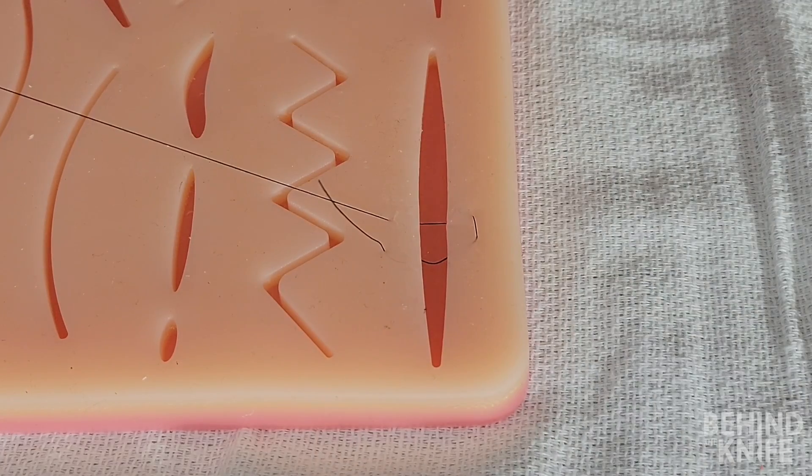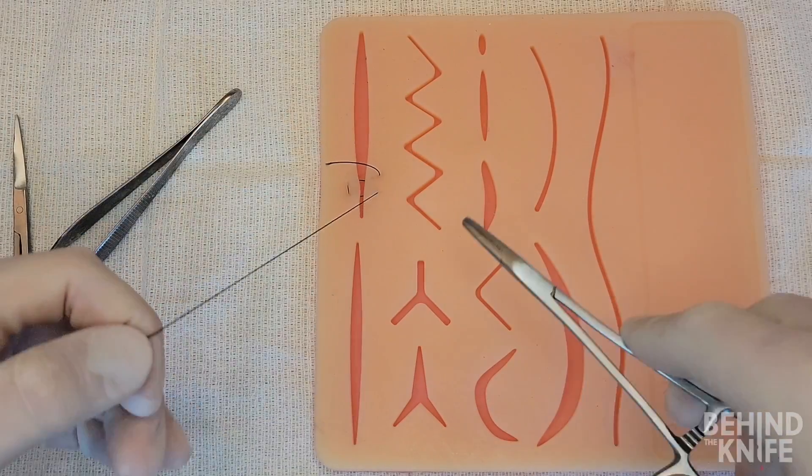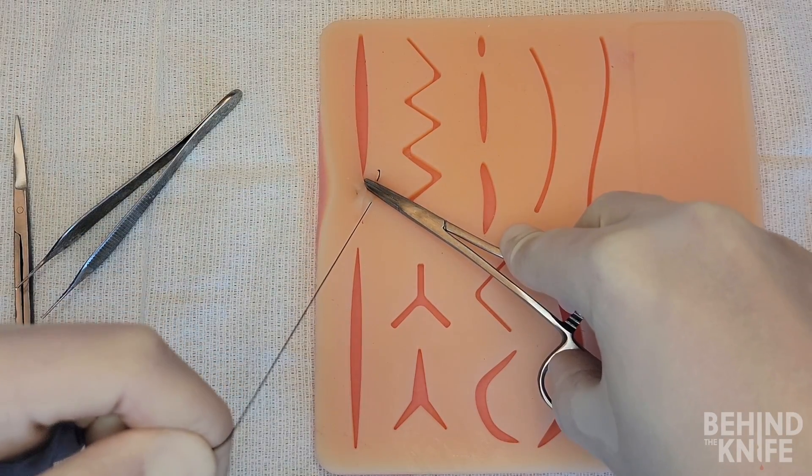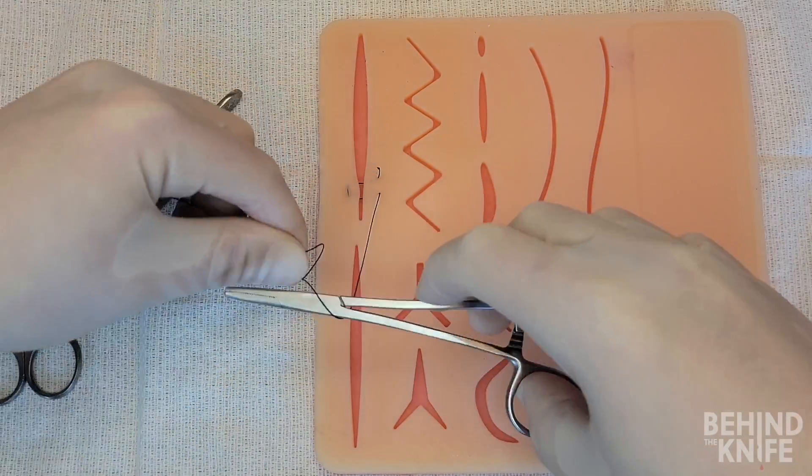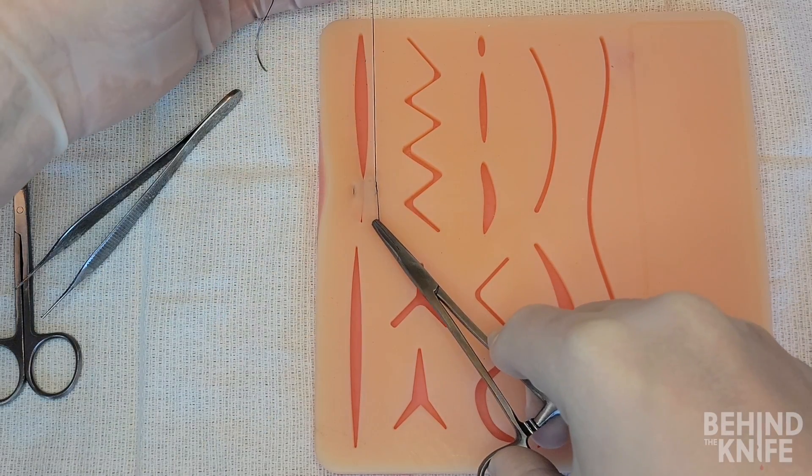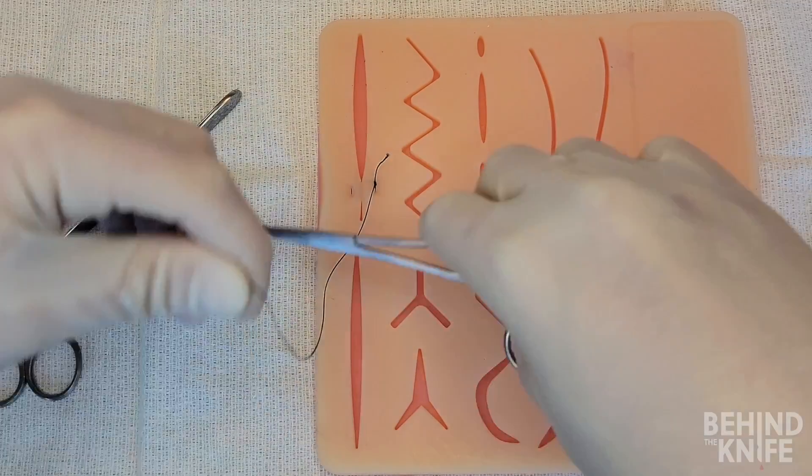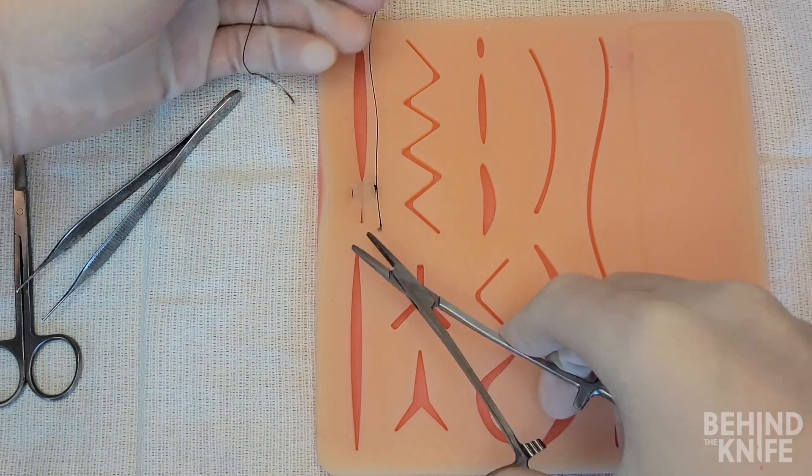Once we perform our backhanded throw, both of the suture threads will be on the same side of the wound, and we will instrument tie these ends now so that the knot is on the same side where the suture initially started. When tying this knot, the suture should be tied down snug but not excessively tight.